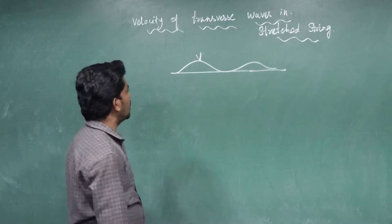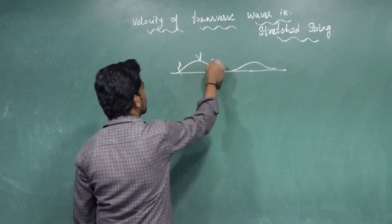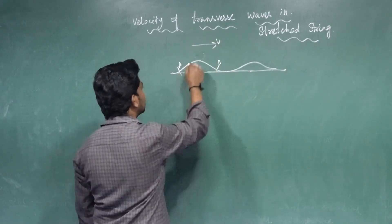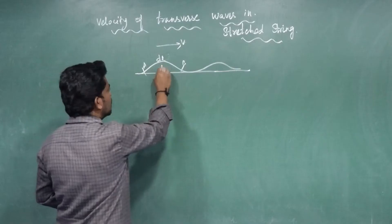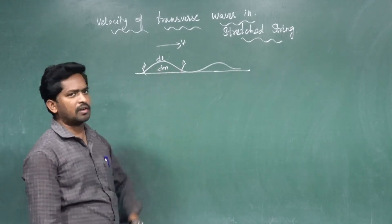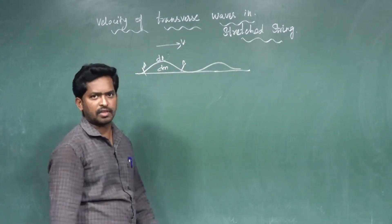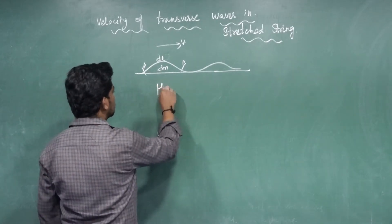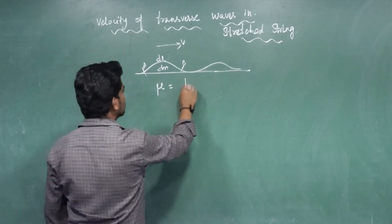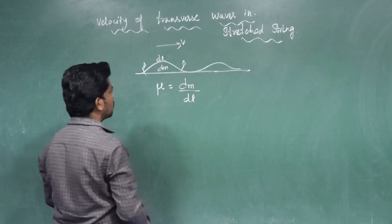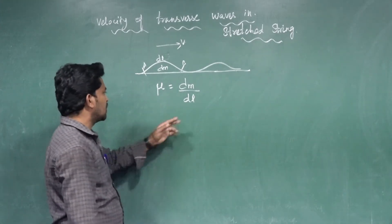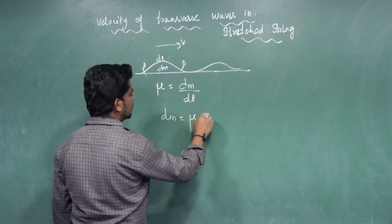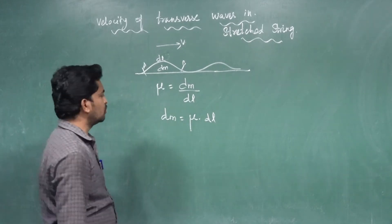Consider a point AB on the pulse. The pulse takes a minimum length DL, and the mass of this small element is DM. The length of the arc — the small point of AB on the string — is DL. I want to calculate the linear mass density, mu, which is equal to DM divided by DL. So DM is the small mass of the pulse or arc, and DL is the small length. Therefore, DM is equal to mu into DL.